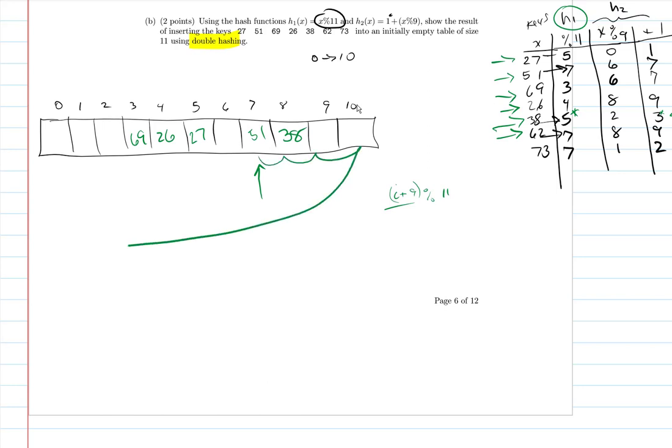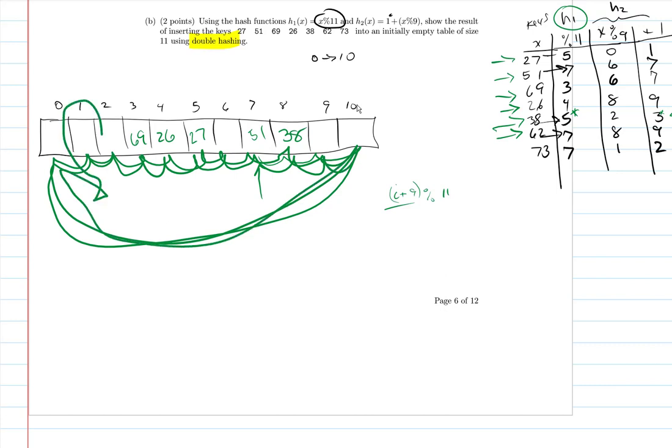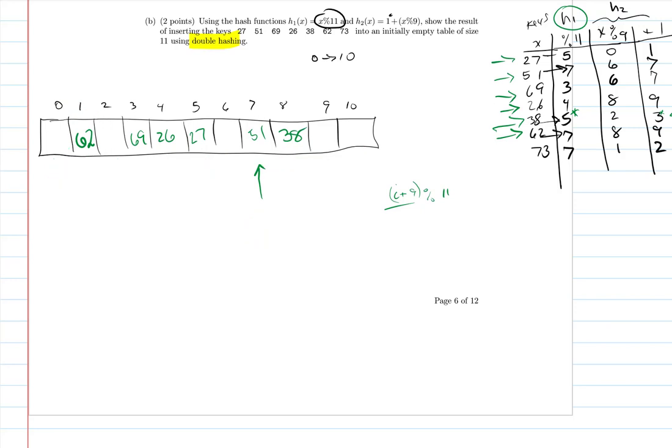So 62 should go into position 7, so we try to add 9. That goes 1, 2, 3, 4, 5, 6, 7, 8, 9, still occupied. Do it again. 1, 2, 3, 4, 5, 6, 7, 8, 9, occupied. 1, 2, 3, 4, 5, 6, 7, 8, and 9. So our 62 ends up going right here.